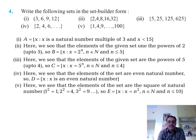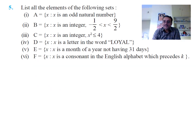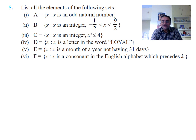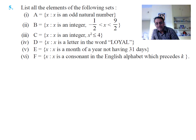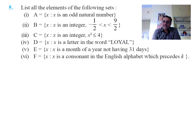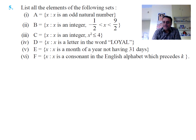Question 5: List all the elements of the following sets. The first set is {x : x is an odd natural number}, giving 1, 3, 5, 7, 9, 11, and so on. The next set is {x : x is an integer and -1/2 < x < 9/2}, giving 0, 1, 2, 3, 4.